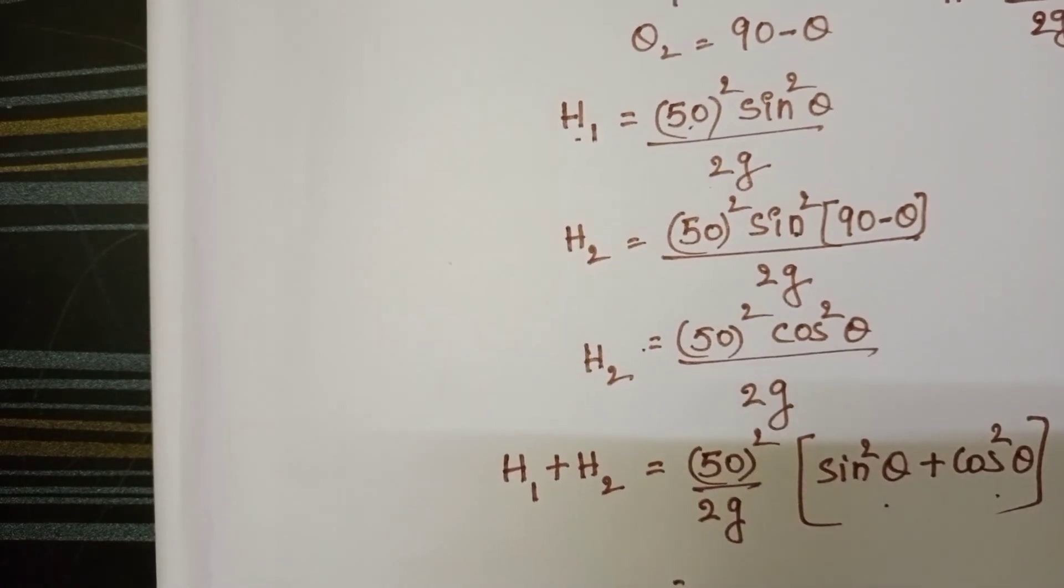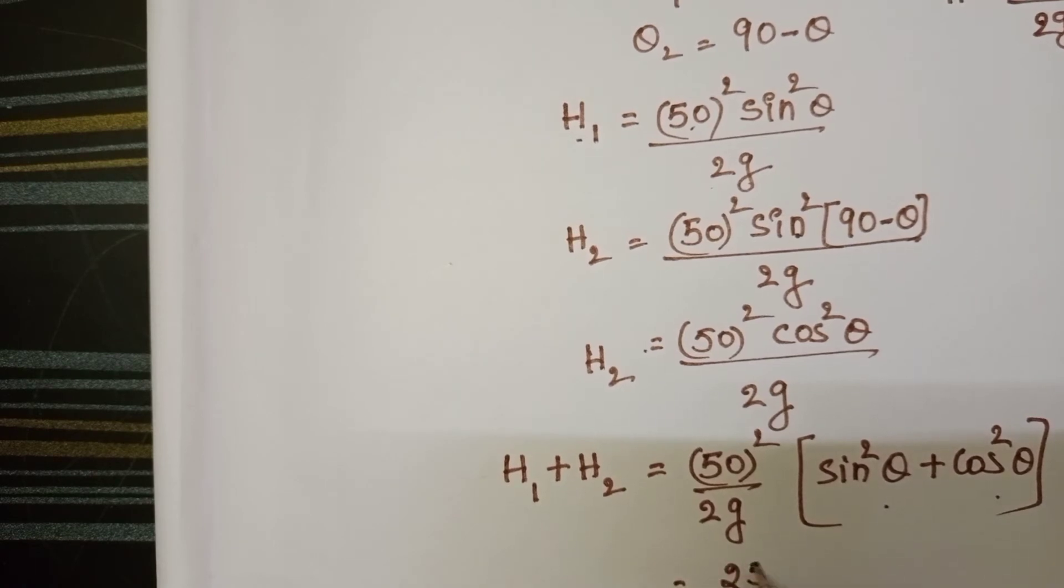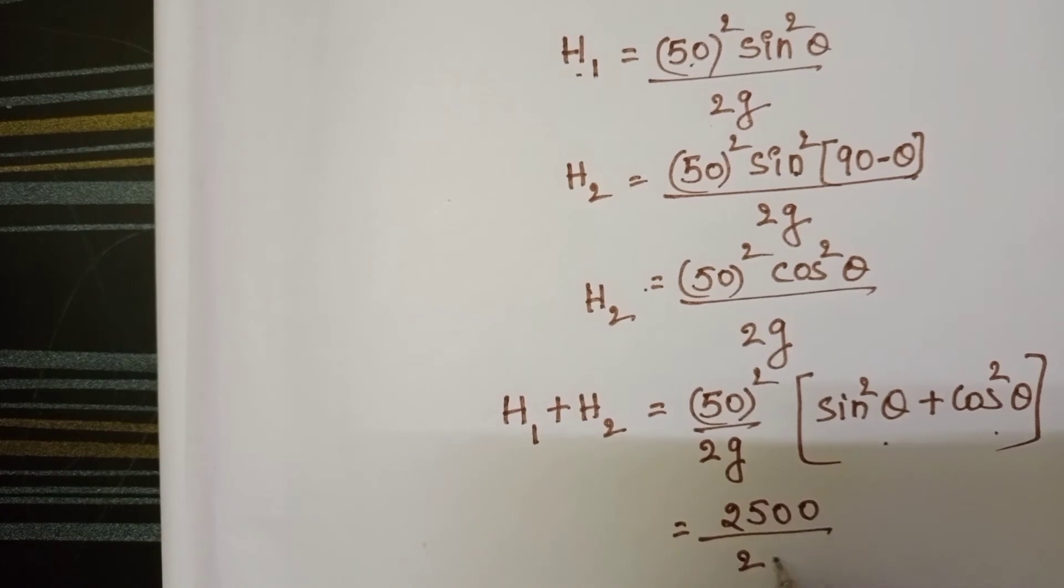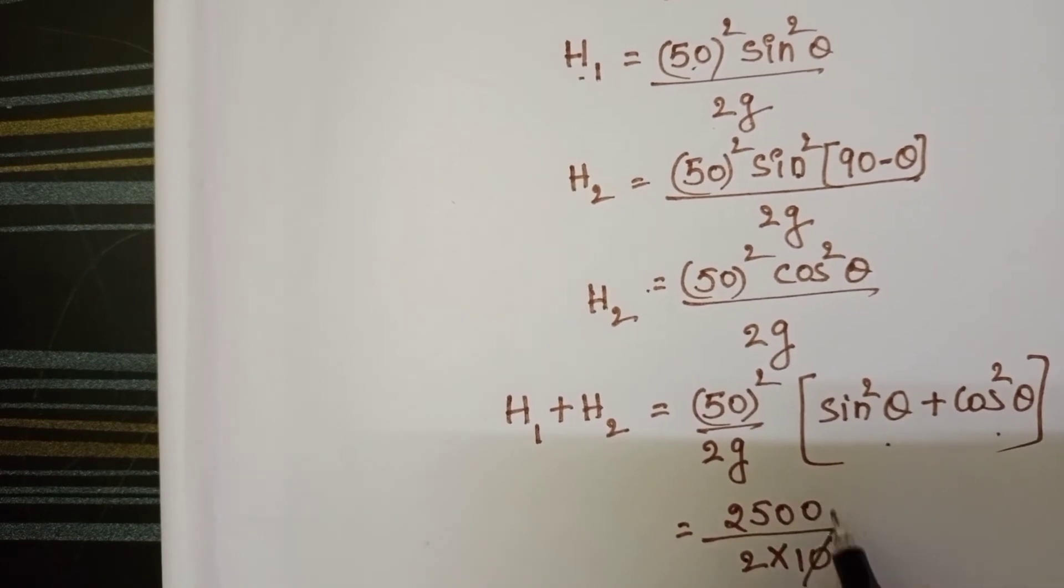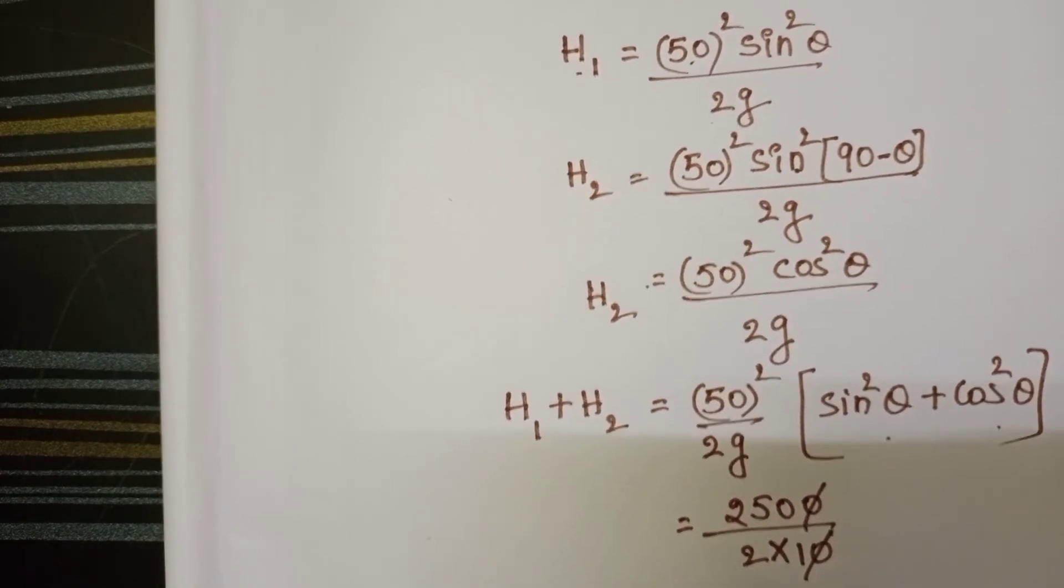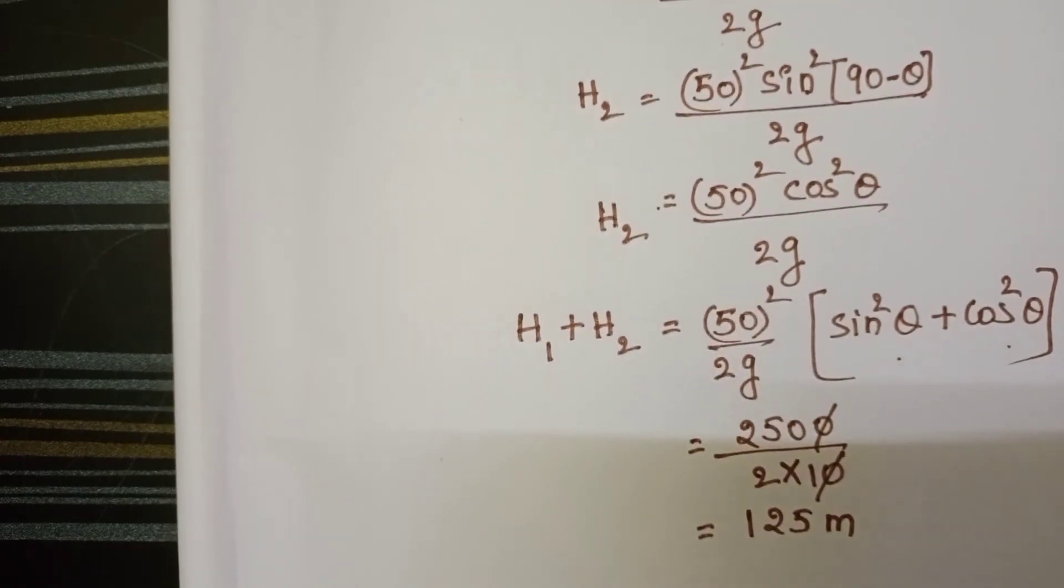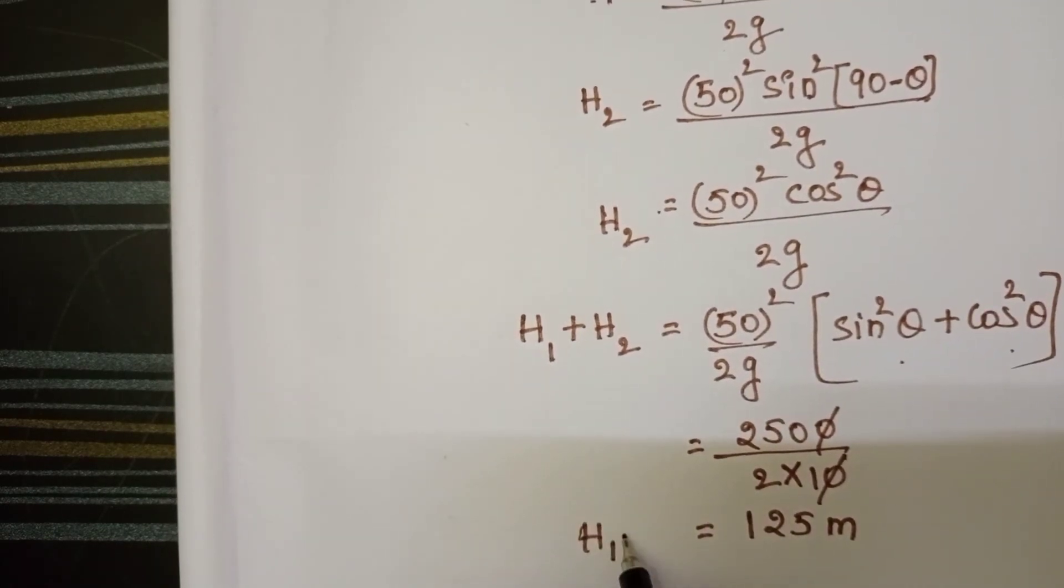50 whole squared is 2,500 by g value 10, so 125 meters. H1 plus H2 equals 125 meters.